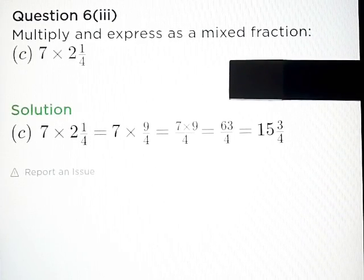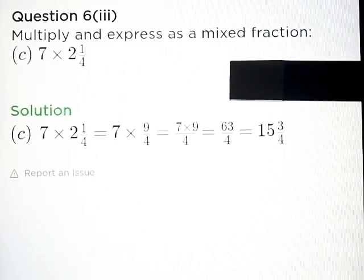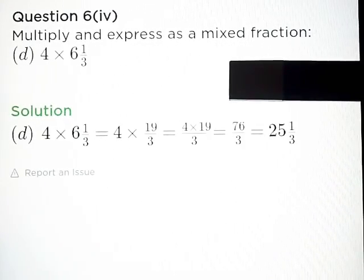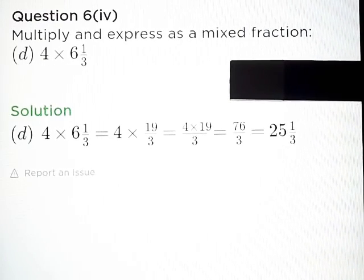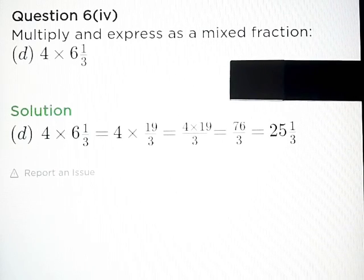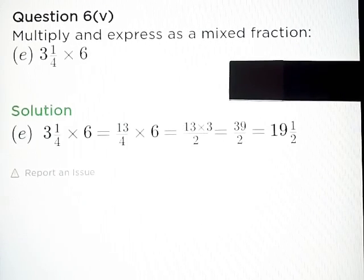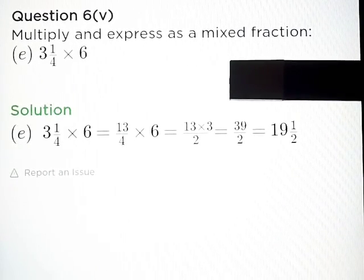Part C: 7 into 2 and 1 upon 4 — answer: 63 upon 4. Part D: 4 into 6 and 1 upon 3 — answer: 76 upon 3.